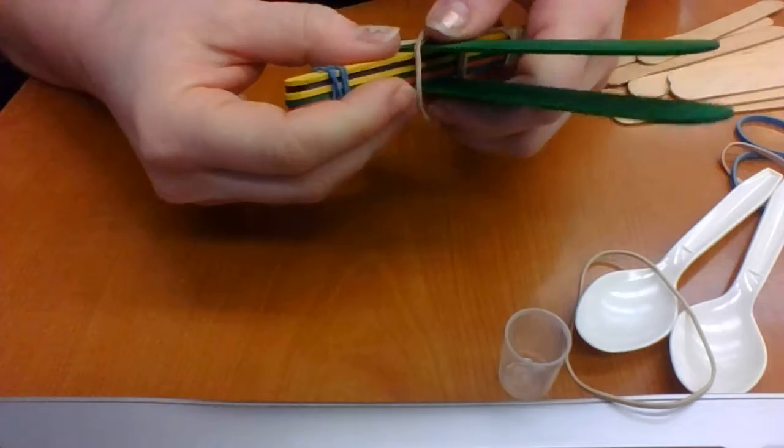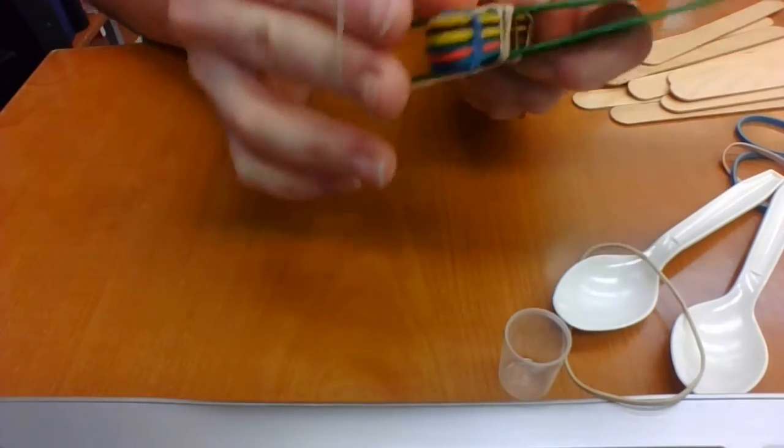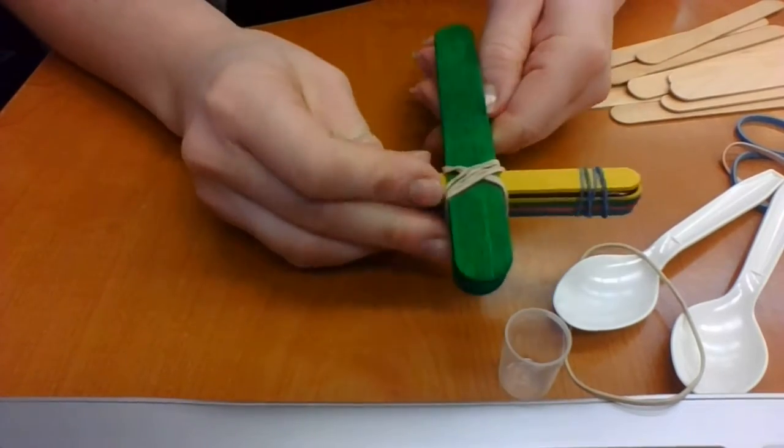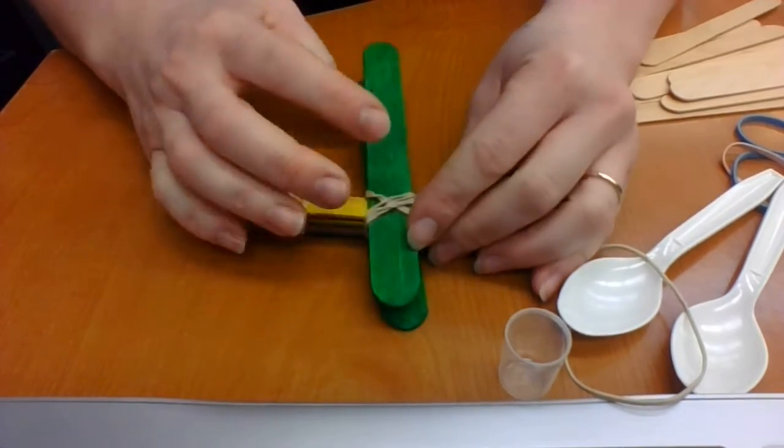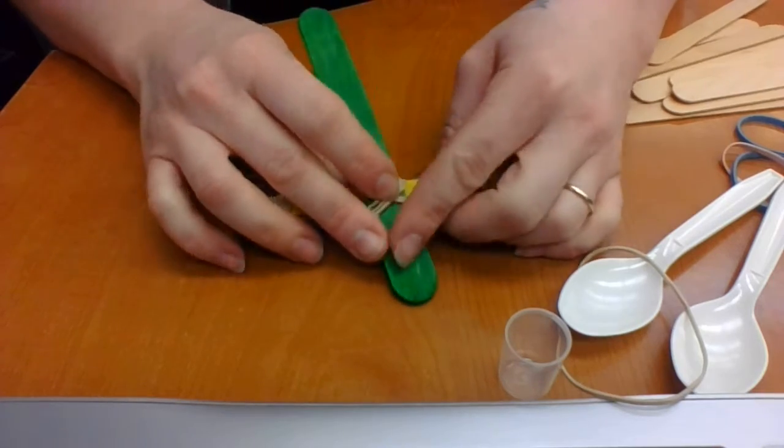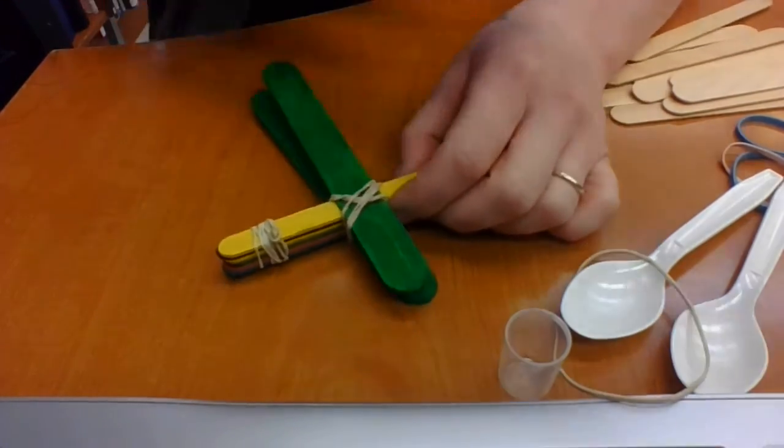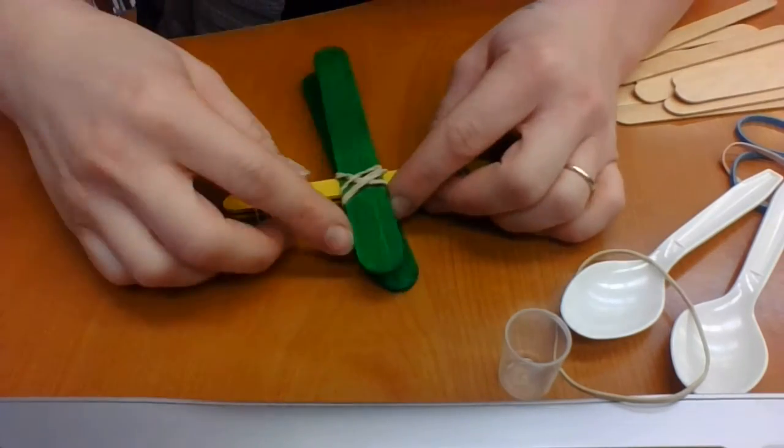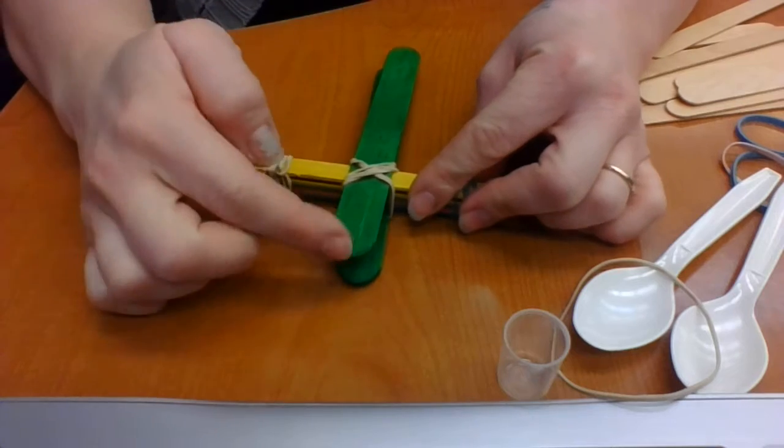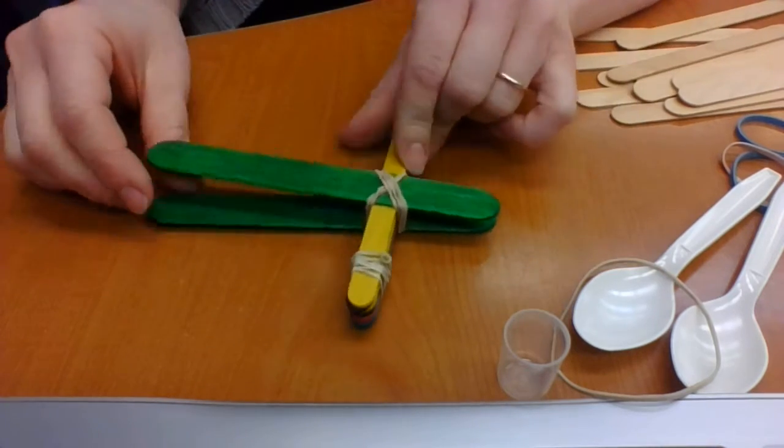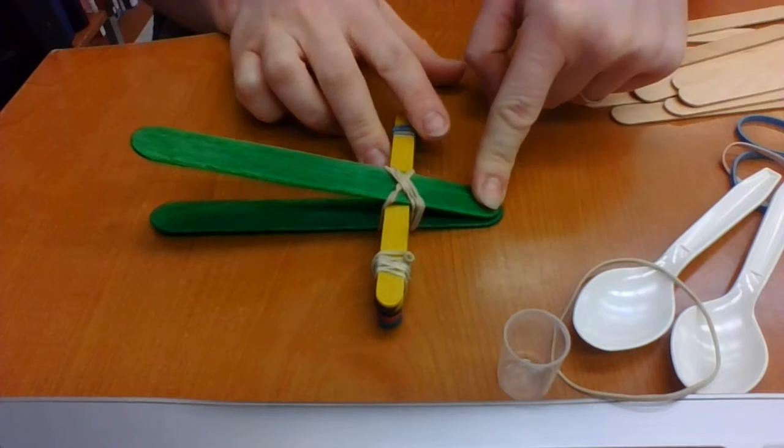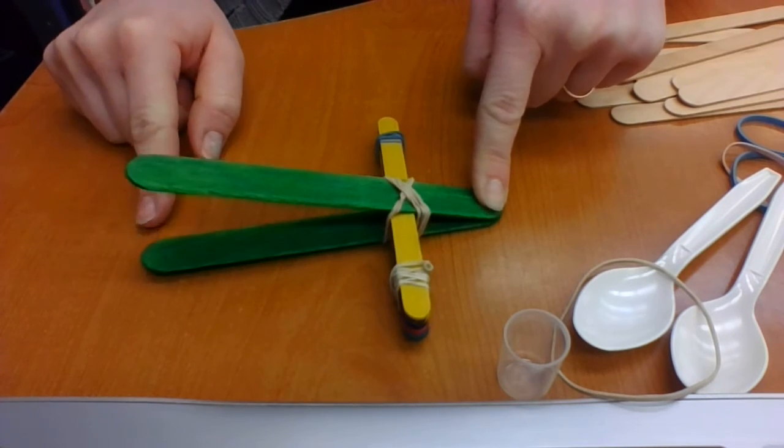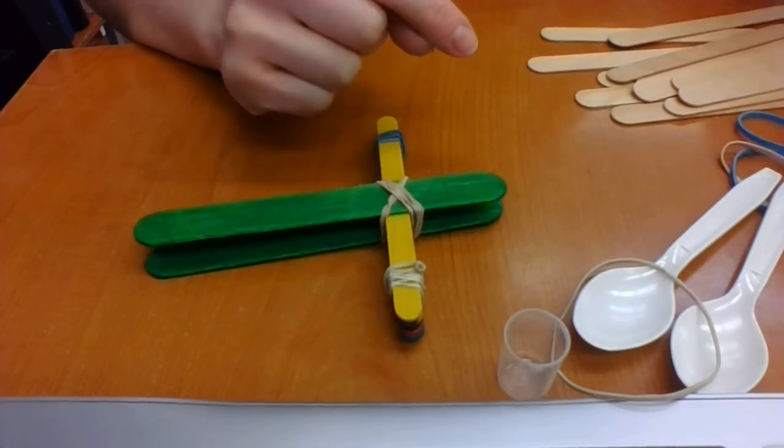Then you're just going to crisscross it over and make an X shape here. I don't know if it makes sense in the video if you can really see what I'm doing. So then my issue is we have this side is up and this side is up, but we want to keep it so this side stays down so that this can properly fling stuff. So we need another rubber band at the very end here.